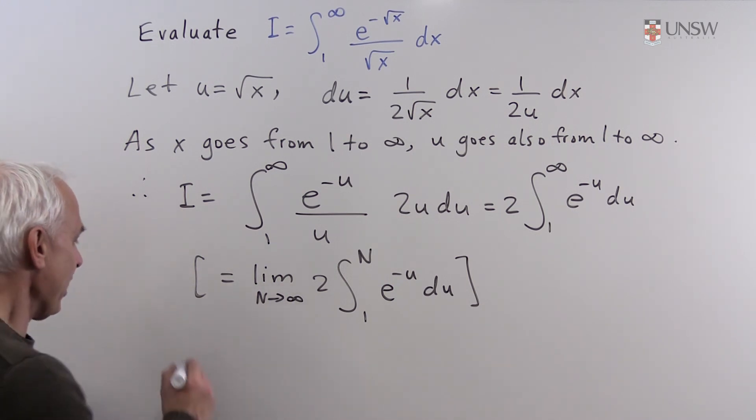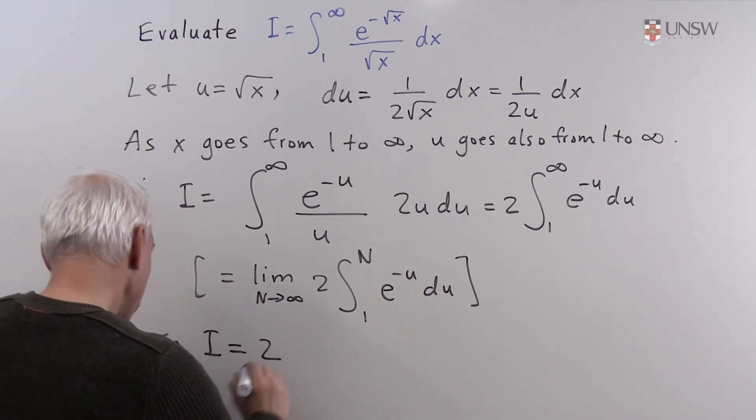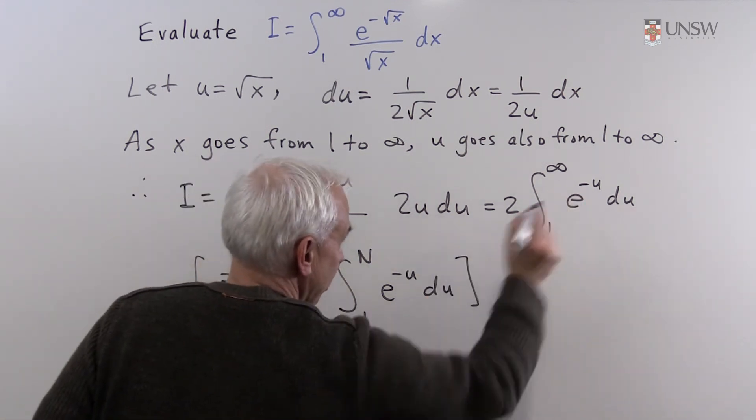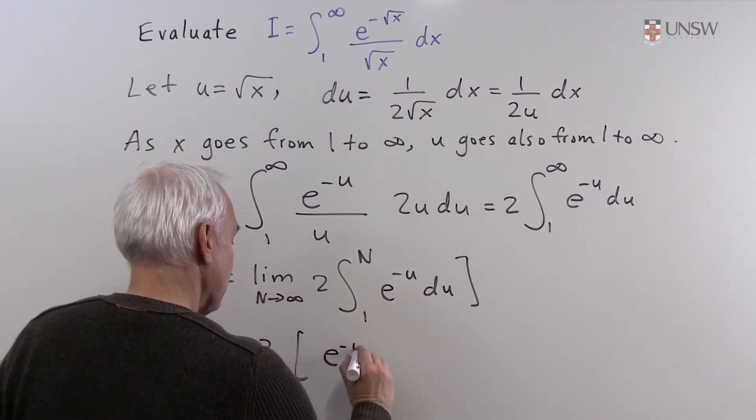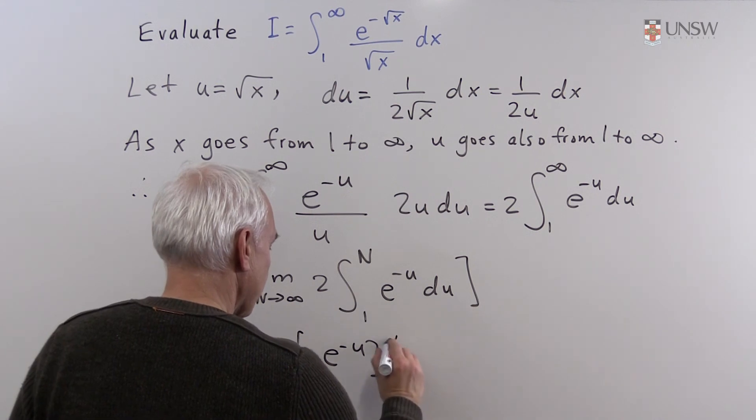So we can write down what I is. So I is two times the integral of e to the minus u, which is e to the minus u with a minus sign, from one to infinity.